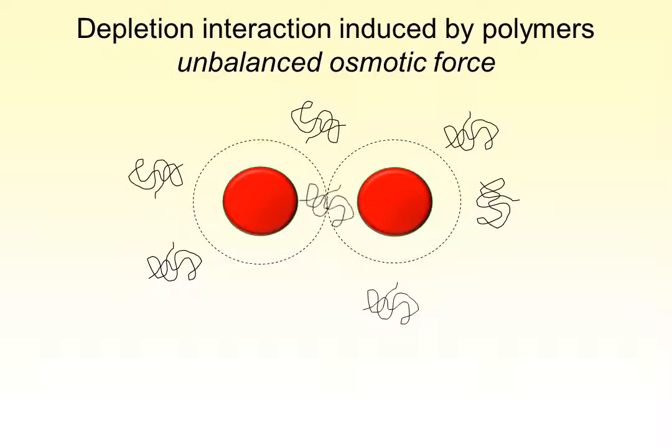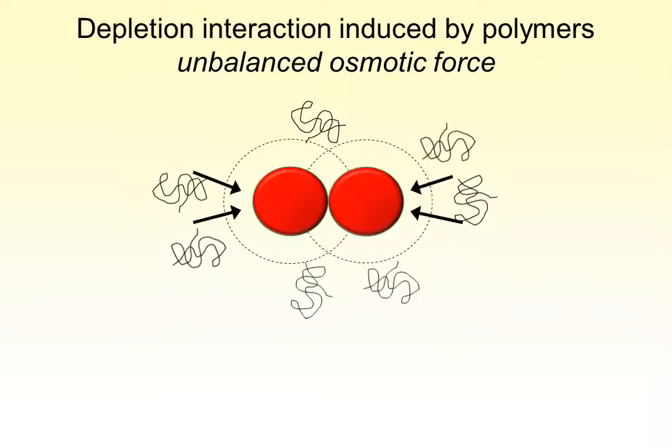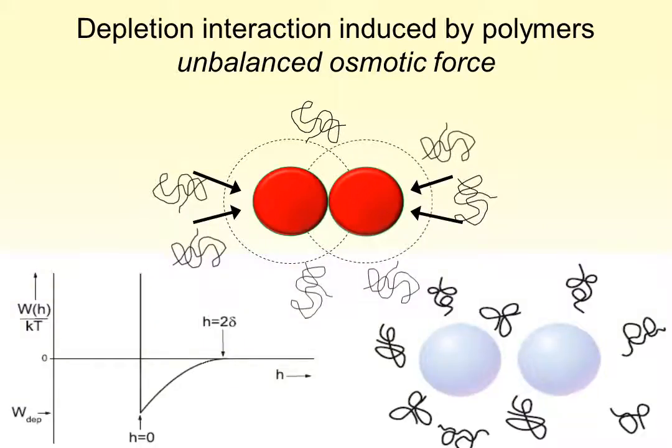Once again, I show what happens. It follows that the free energy of the polymers is minimized by states in which the colloidal spheres are close together. The effect of this is just as if there were an attractive force between the spheres, even while the direct colloid-colloid and colloid-polymer interactions are repulsive.